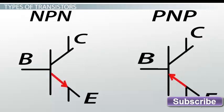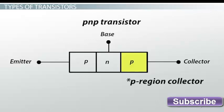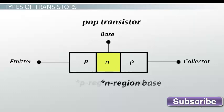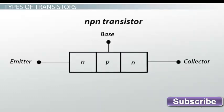The sequence of doped regions in a PNP transistor is P region collector, N region base, P region emitter. The sequence of doped regions in an NPN transistor is N region collector, P region base, N region emitter.